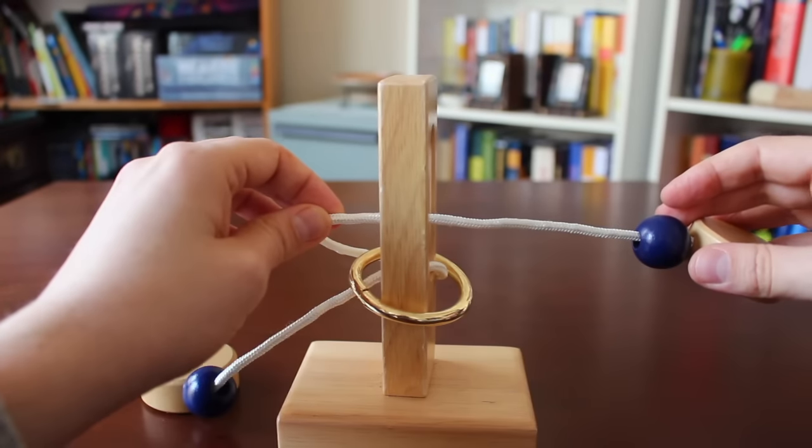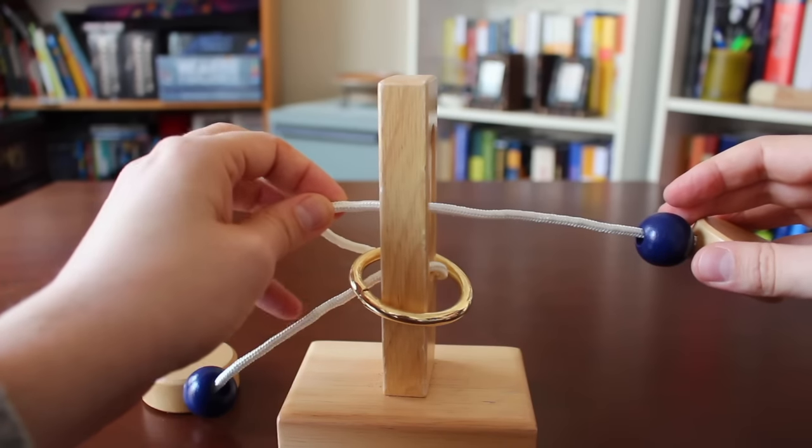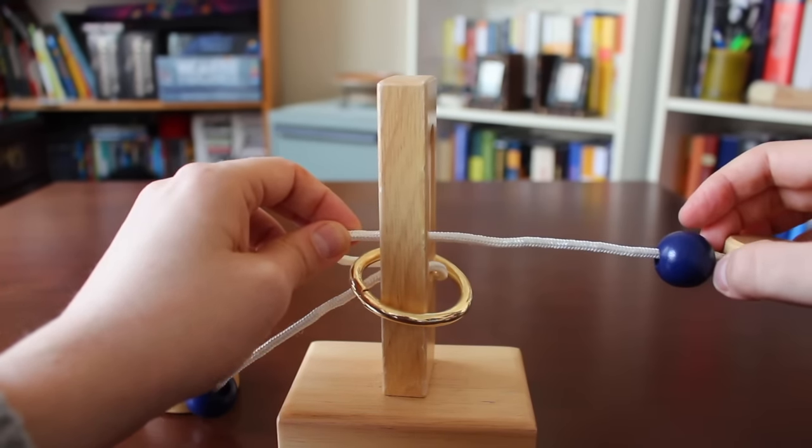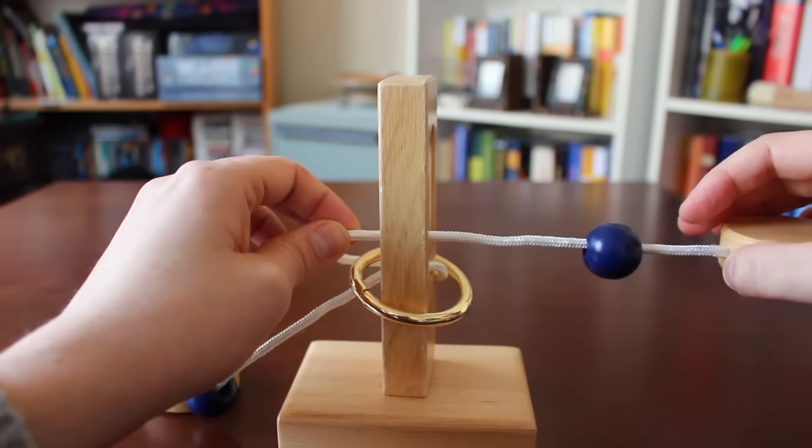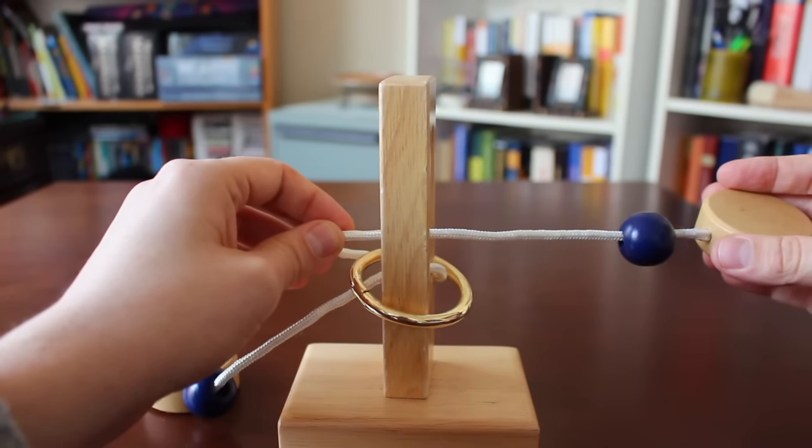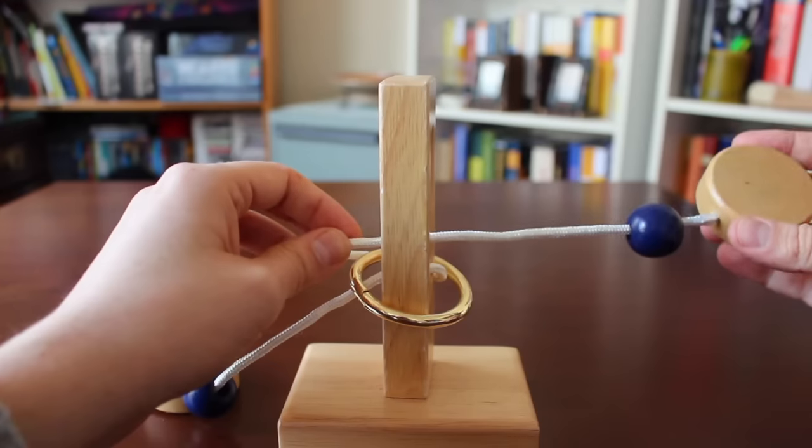Now if we look at the top part of the puzzle and ignore the rest, it looks again like the no-loop Wit's End case. So if we apply the same moves, we should be able to take the ring off.